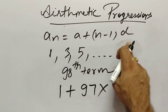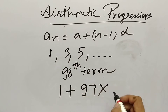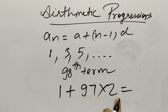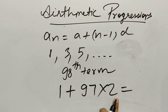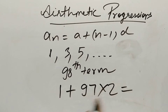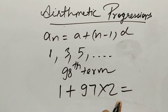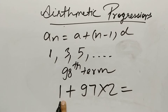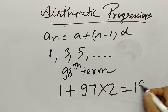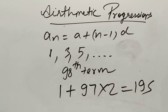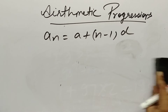D equals 3 minus 1 equals 2. So 89 into 2 equals 178, and 178 plus 1... actually working it out: the answer is 179. Wait — let me recheck: a equals 1, n equals 90, d equals 2, so 89 times 2 is 178 plus 1 is 179. The 90th term is 179.